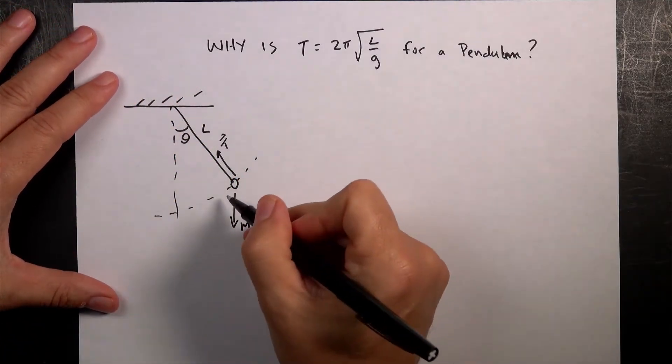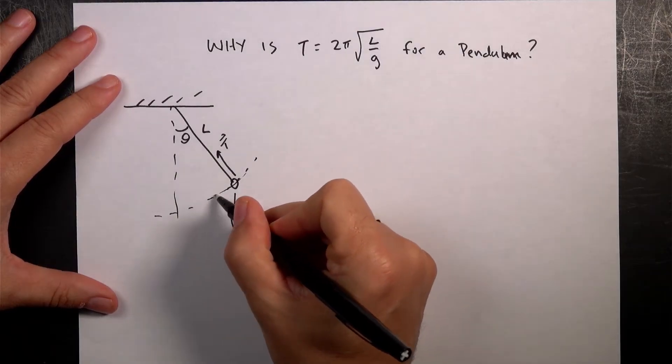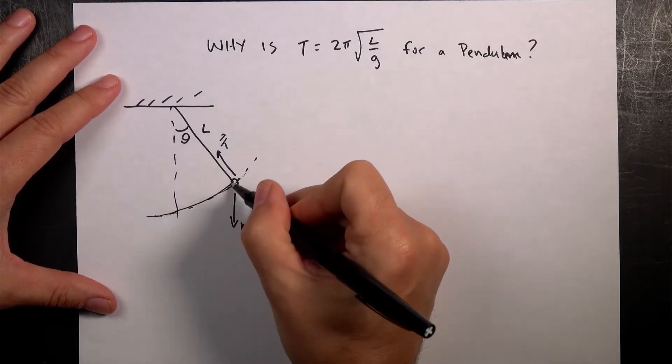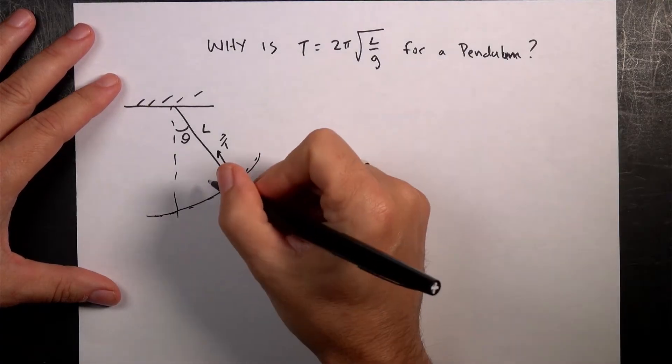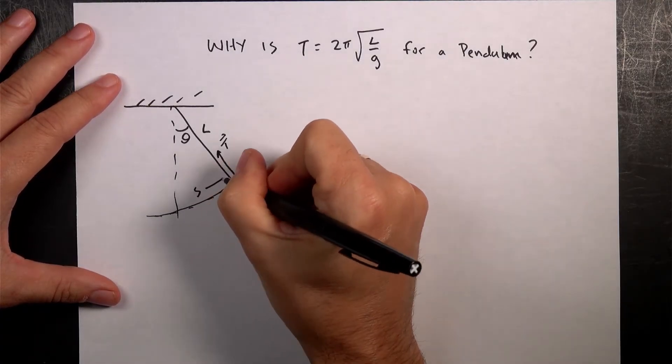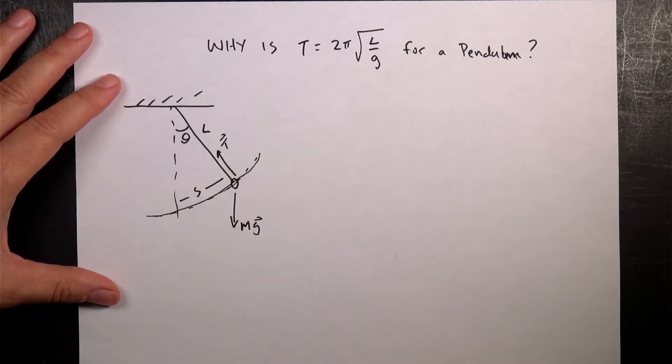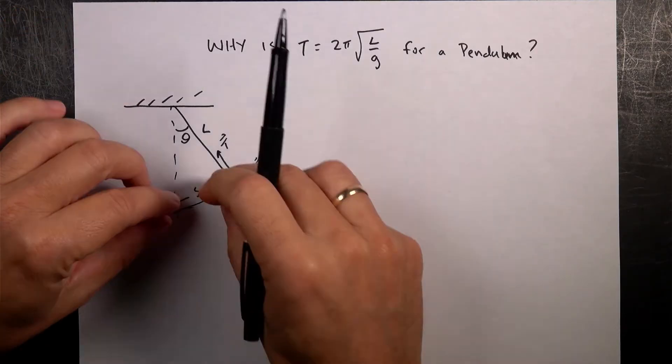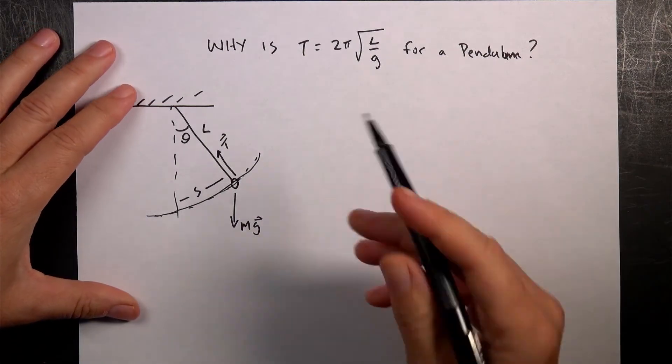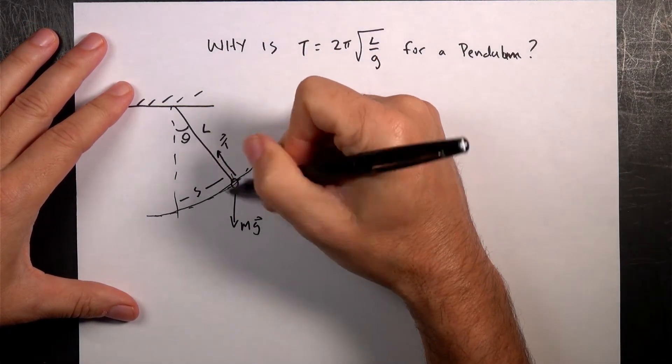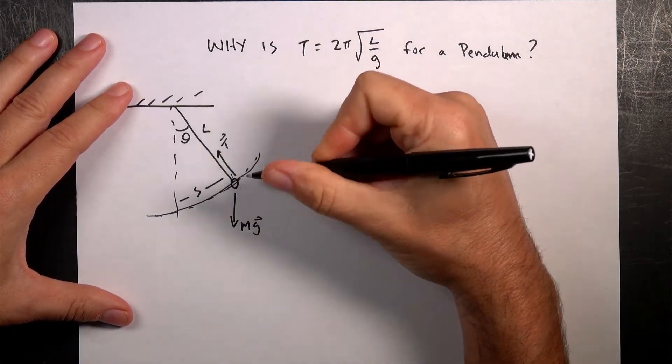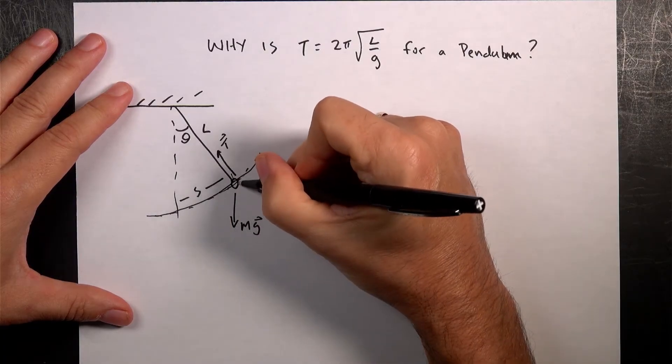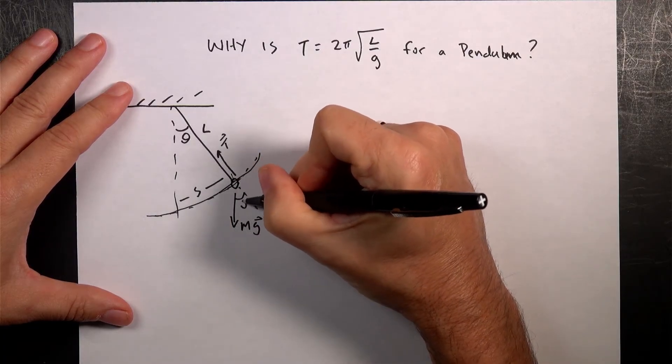So one thing that we can do is just to deal with the motion of this in the direction it's constrained to move in that circle. So let's call this distance S, right there. And so I want to use Newton's second law in the S direction, which is along this arc length. Imagine I flattened it out and made it a string.